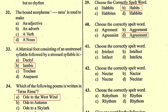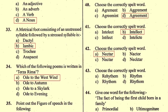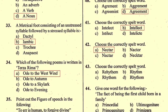Question number 41: Choose the correctly spelt word. The correctly spelt word is given in option B — 'nectar'. Question number 42: Choose the correctly spelt word. The correctly spelt word is given in option B — 'rhythm'.